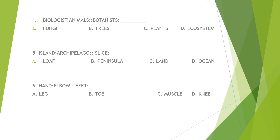Number 4: biologist is to animals as botanist is to plants. Number 5: slice is to loaf, letter A. Number 6: hand is to elbow as feet is to... feet is to knee, letter D.